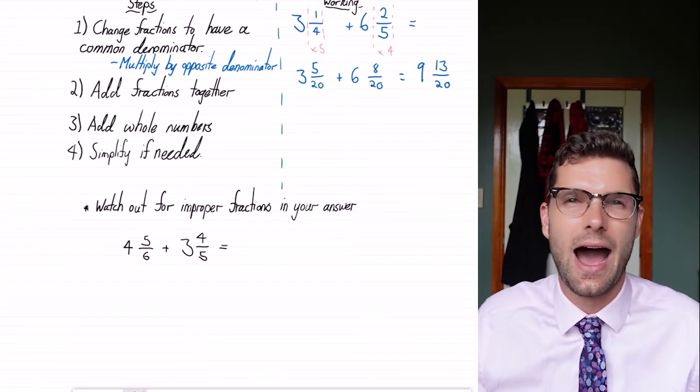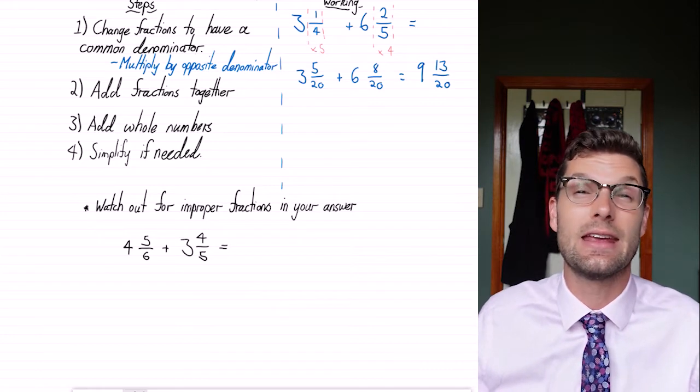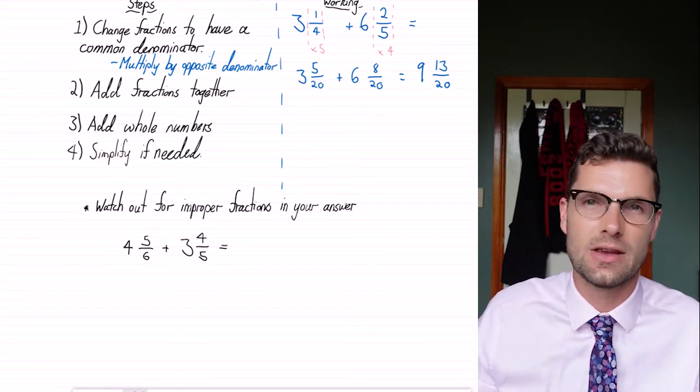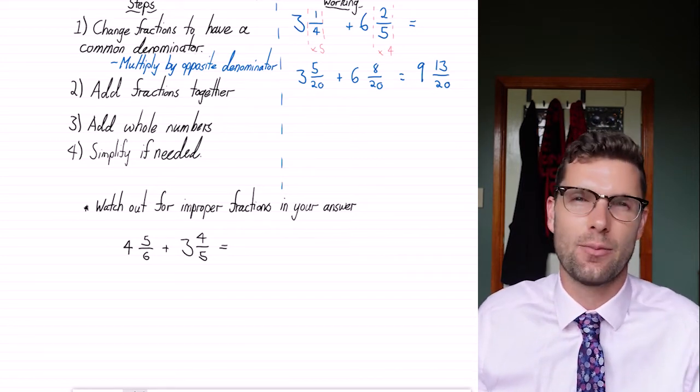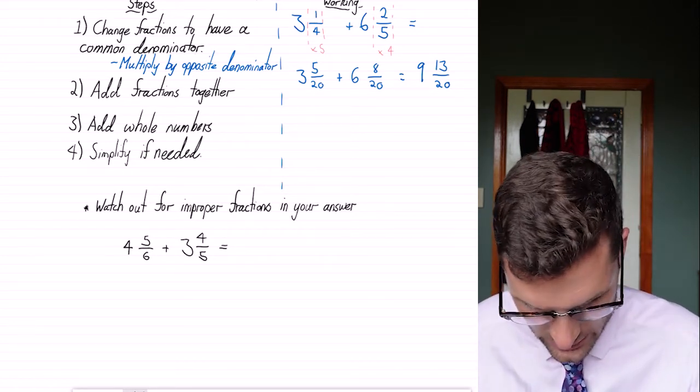The only way that this gets a little bit harder is if our answer ends up with an improper fraction within a mixed numeral. All we have to do there is add one whole to the number out the front. So for example, in this question, we're gonna follow the exact same steps as we did before.